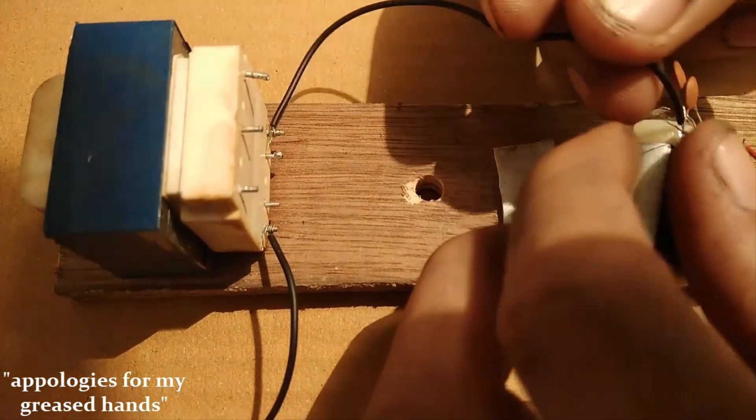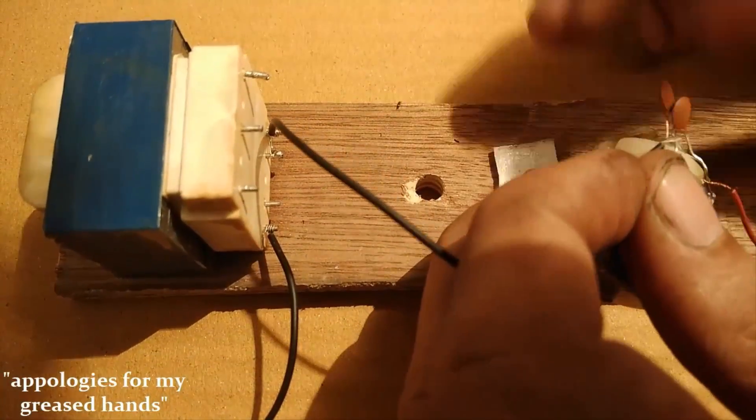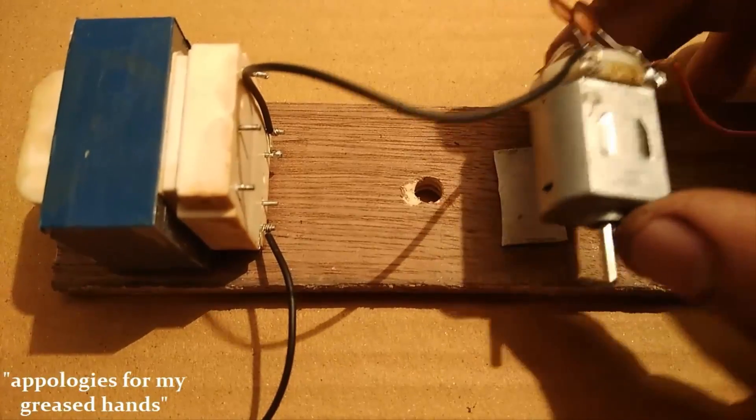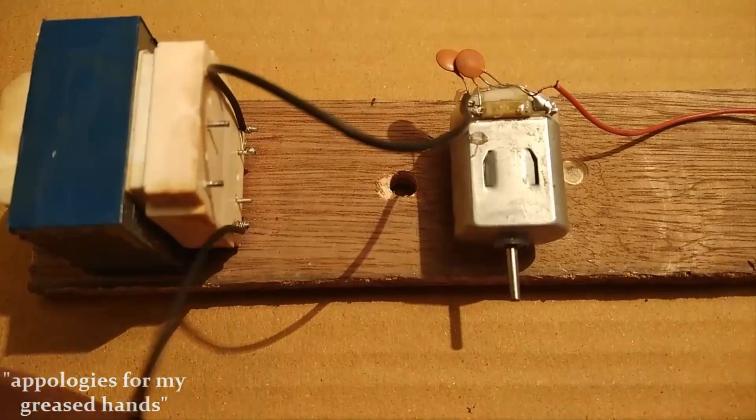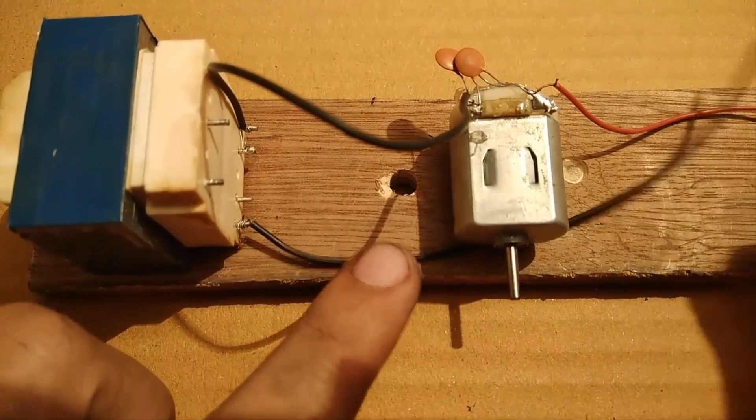Now the low voltage side of the transformer will be connected in series with the motor and the battery. The polarities of the battery does not matter here because it is a simple type 2 inverter.